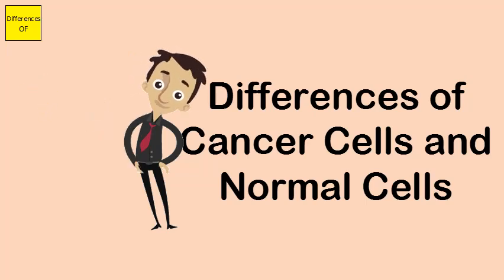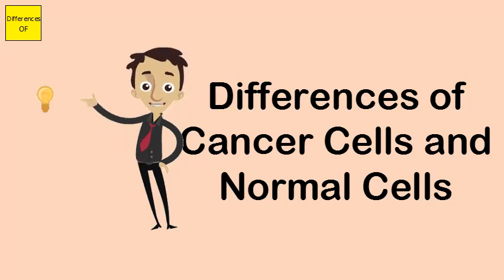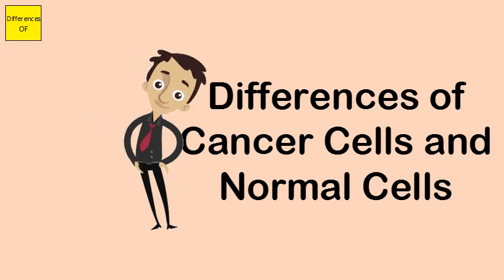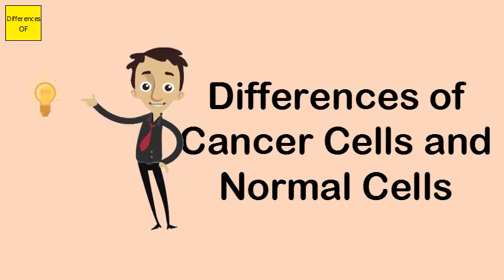Normal cells recognize signals and know when there are enough new cells, and stop dividing. Cancer cells do not recognize signals; hence these cells erratically reproduce mutated cells.